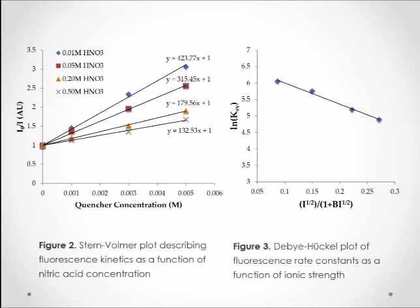Figure 3 illustrates the Debye-Hückel equation for the data we obtained. It shows the linear relationship between fluorescence rate constants and ionic strength of solution. From this graph, we extrapolate a y-intercept and further calculate the value of quenching rate at zero ionic strength to be 44.2298 per nanosecond.